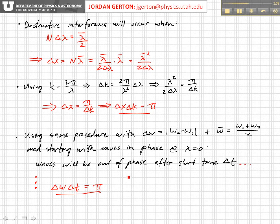So these relations, delta x delta k is equal to π and delta ω delta t is equal to π, are called uncertainty relations, and they express the fact that when a wave is measured over an interval delta x, or equivalent delta t, the uncertainty in the wave number delta k, or equivalently delta ω, is inversely proportional to delta x. So delta k is inversely proportional to delta x, and delta t is inversely proportional to delta ω.